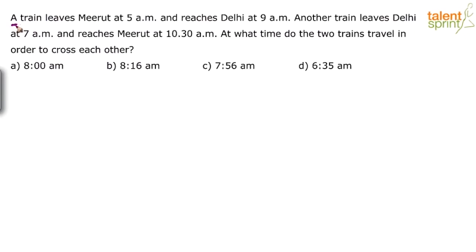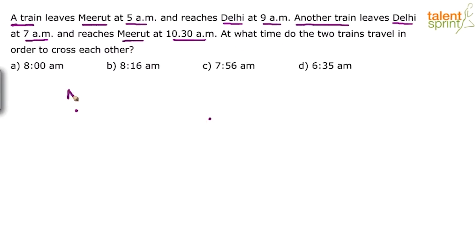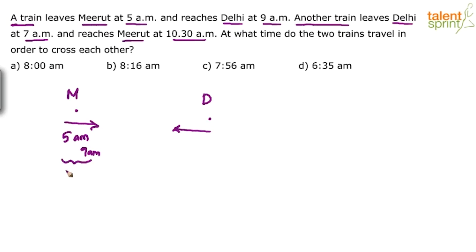There is one train which leaves Mirit at 5 am and reaches Delhi at 9 am. There is another train which leaves Delhi at 7 am and reaches Mirit at 10:30 am. So obviously these two trains will cross each other because the route is the same. One train leaves from Mirit for Delhi, the other from Delhi for Mirit. This first train takes 4 hours to cover the distance.